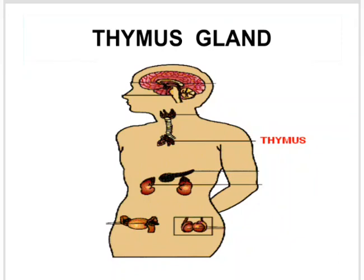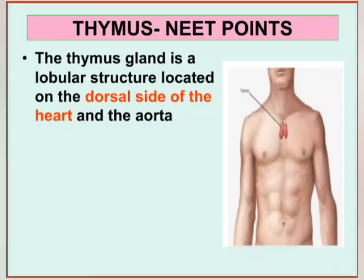Look at the picture showing the location of the thymus gland. It is located in the thoracic region, behind the heart. The thymus gland has a bi-lobed structure and is located on the dorsal side — that means the back side — of the heart and aorta.